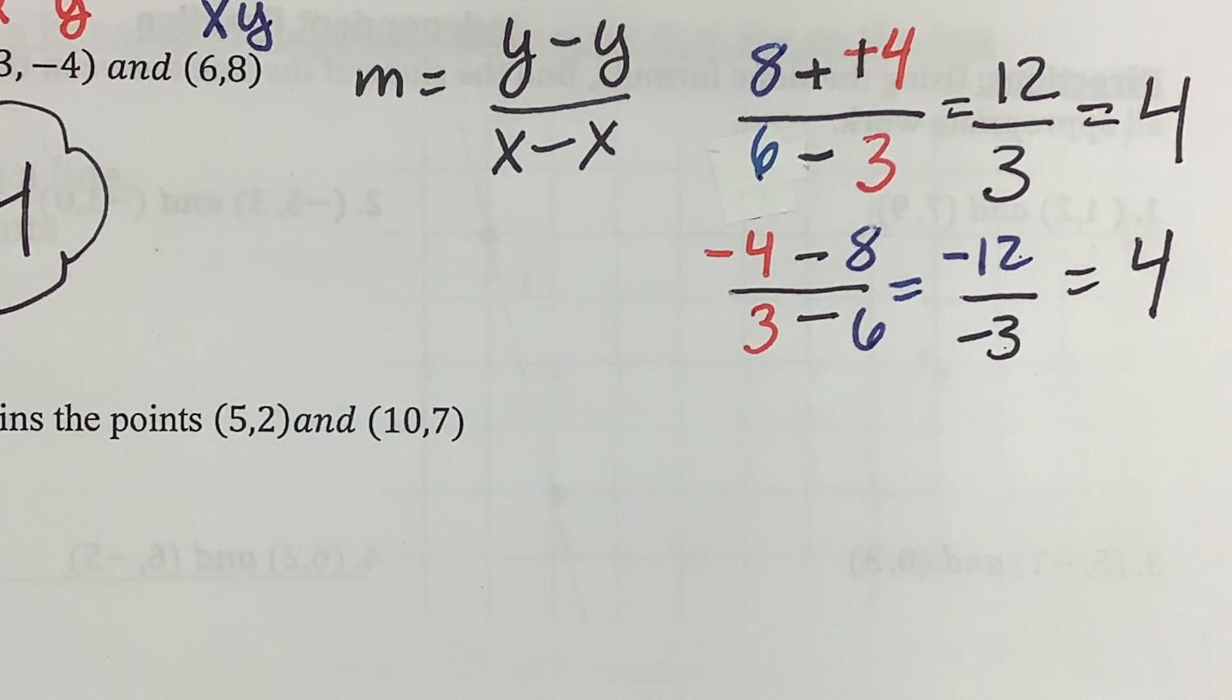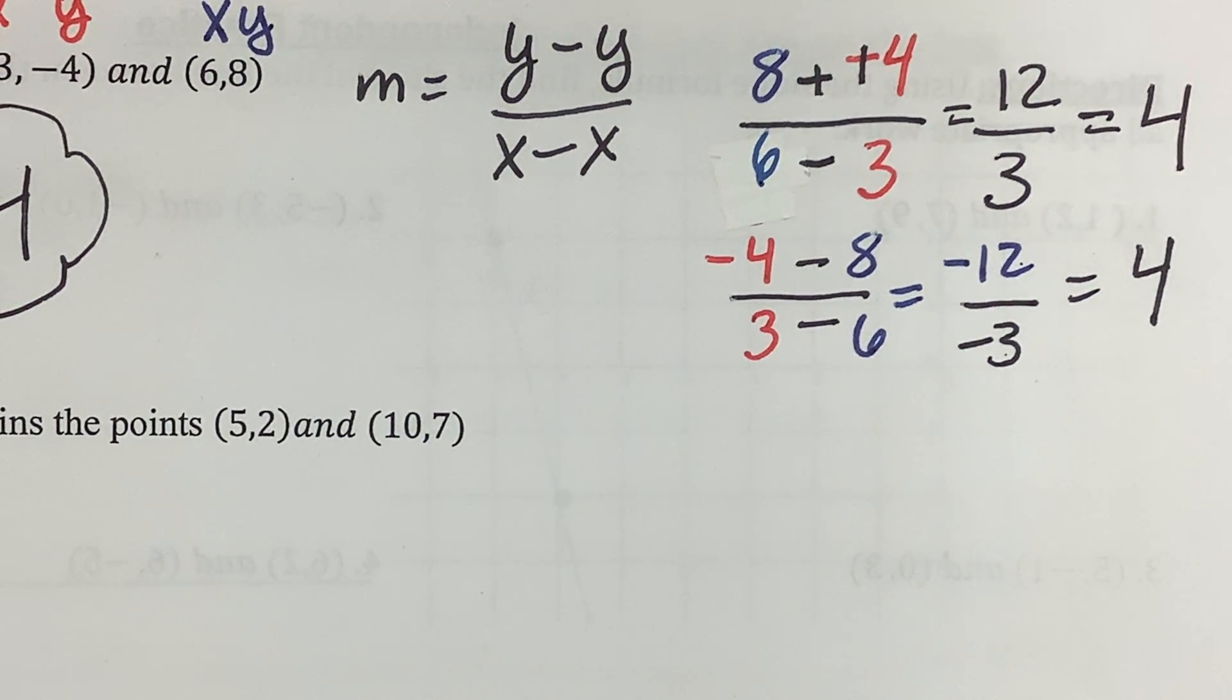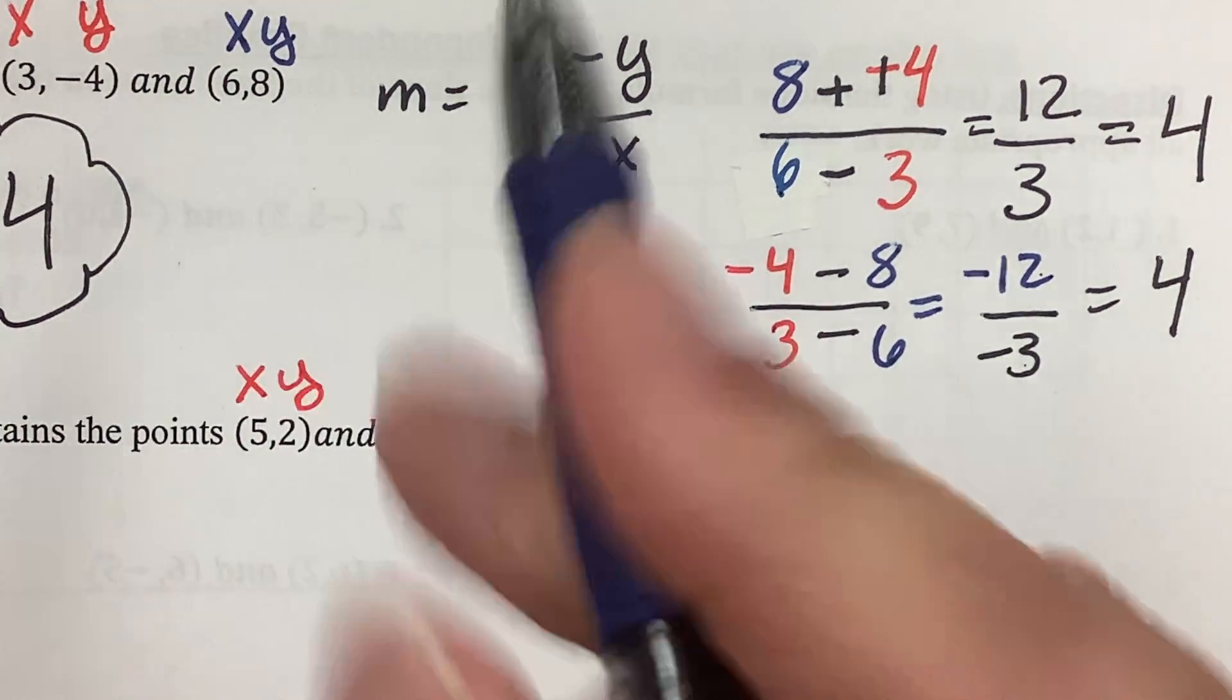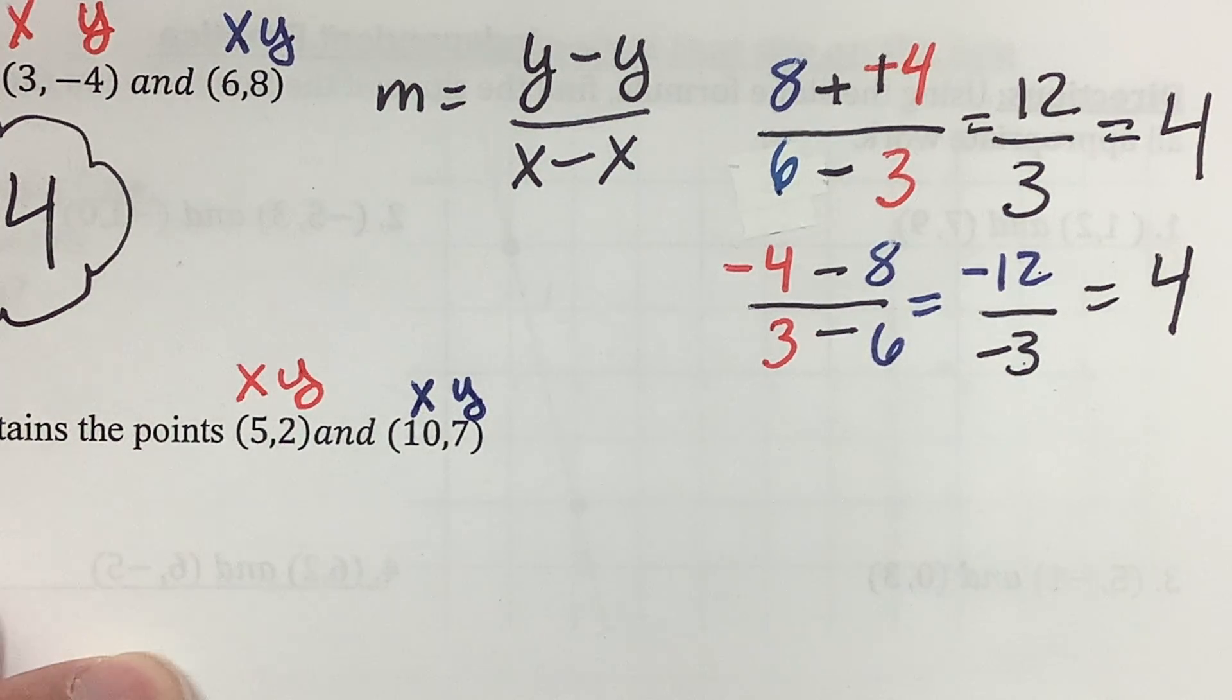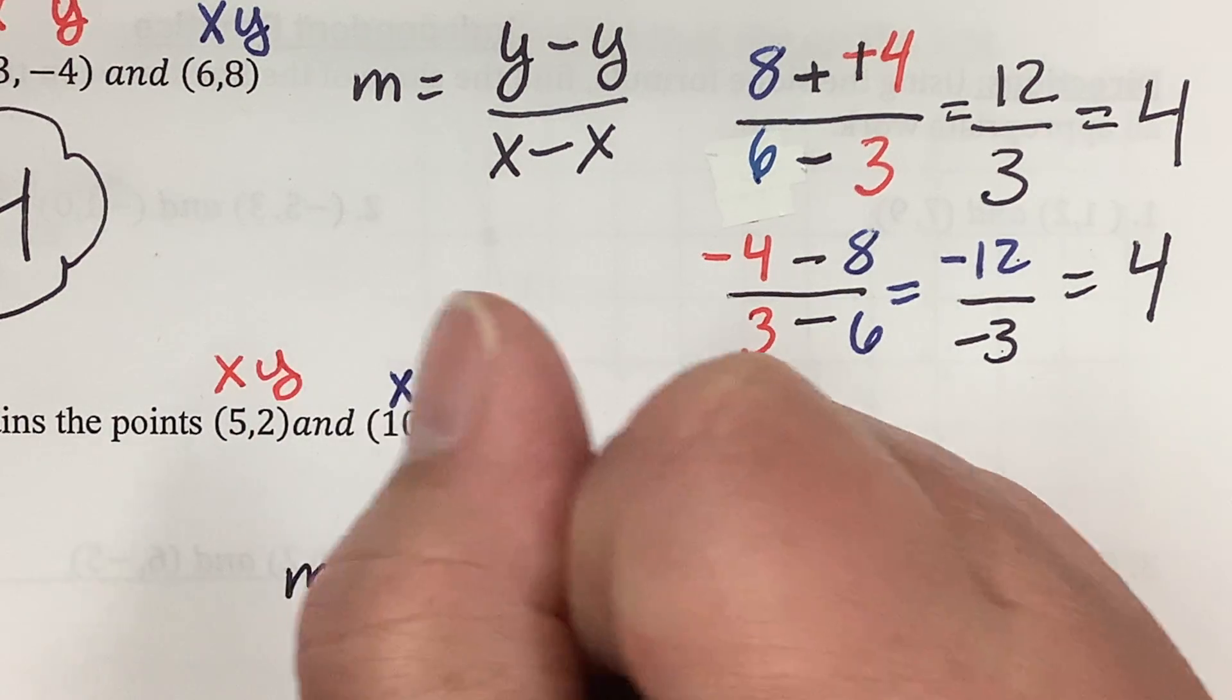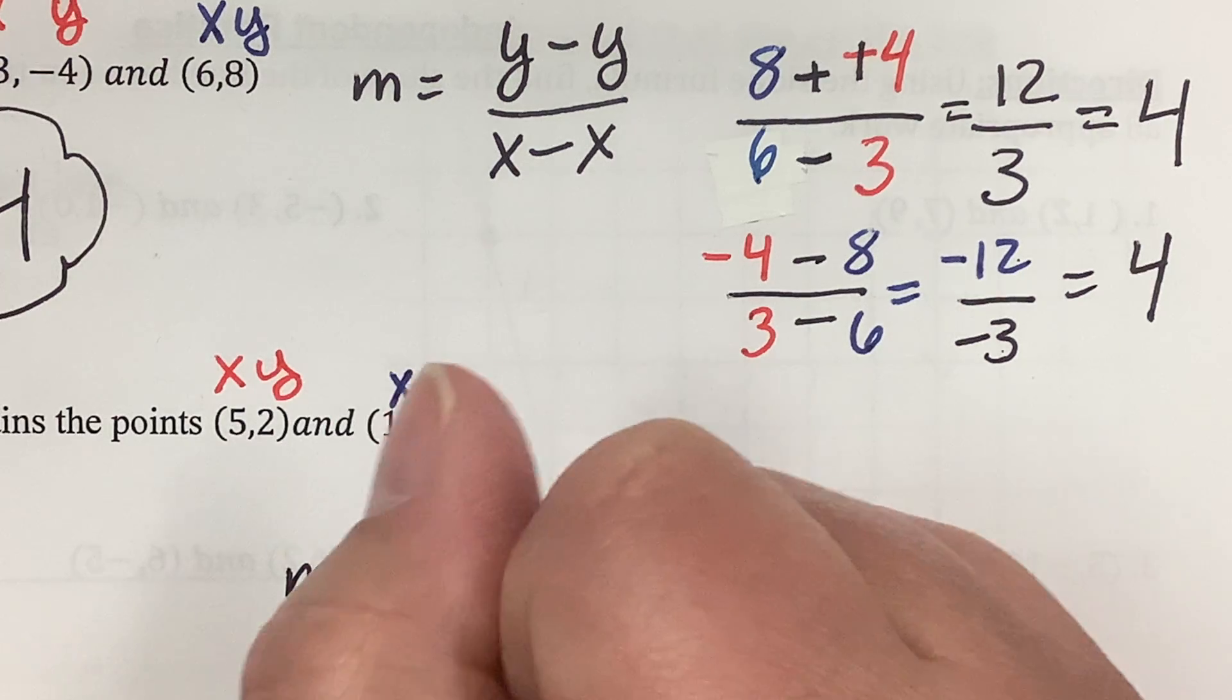So, I'd like you to stop the video and try just the next problem. Go ahead. All right. Welcome back. Let's do this next problem. First, label things. X and y. And x and y. And now, always write the formula. Always write the formula.